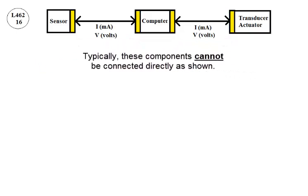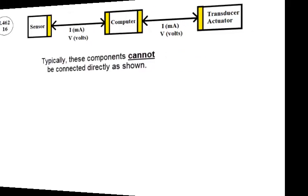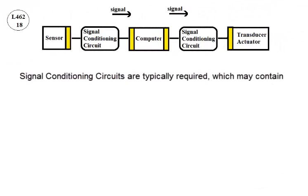Typically these components cannot be connected directly as shown. Signal conditioning circuits are typically required which may contain op amp amplifiers and relays.